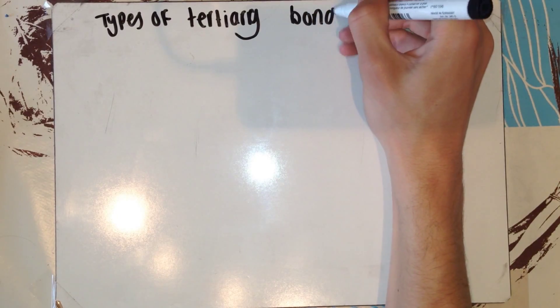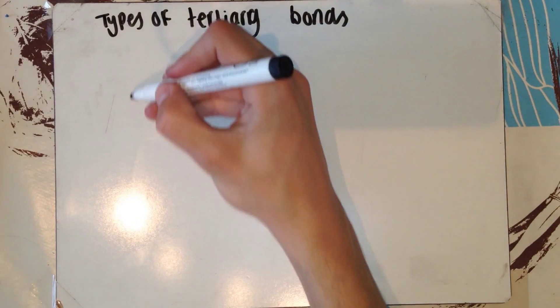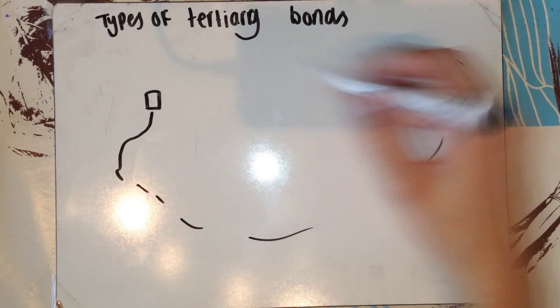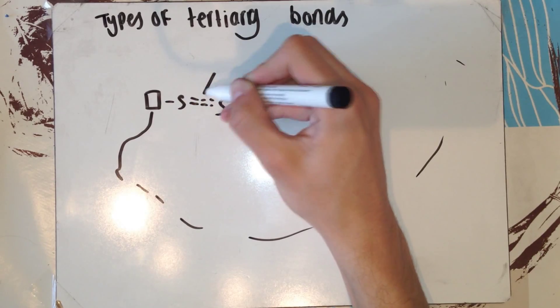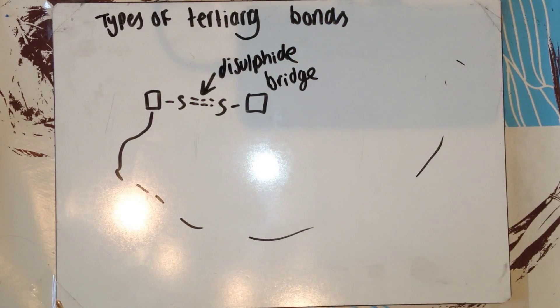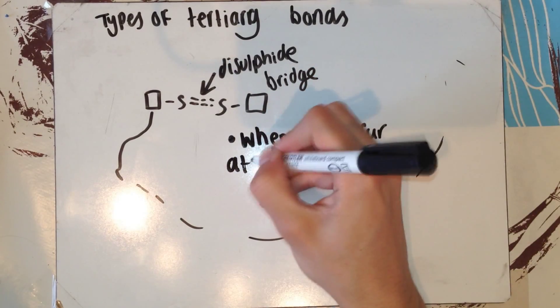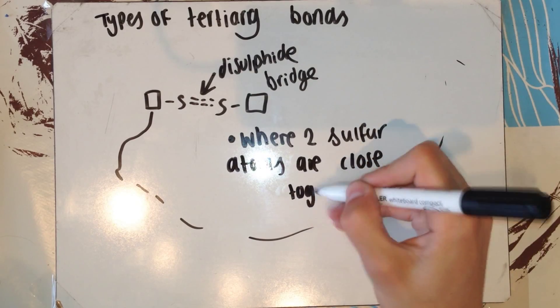Now, I'm going to quickly talk about different types of bonds and attractions that keep the tertiary structure together and held in place. This here is a disulfide bridge. These disulfide bridges form between two different parts of the polypeptide chain. Different amino acids may contain sulfur, so when these sulfur-containing amino acids are close, disulfide bridges can form.